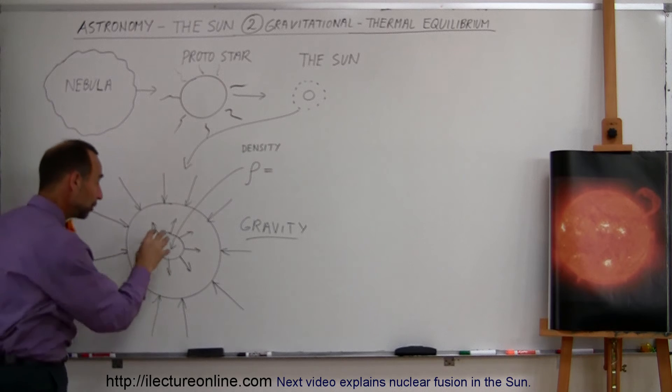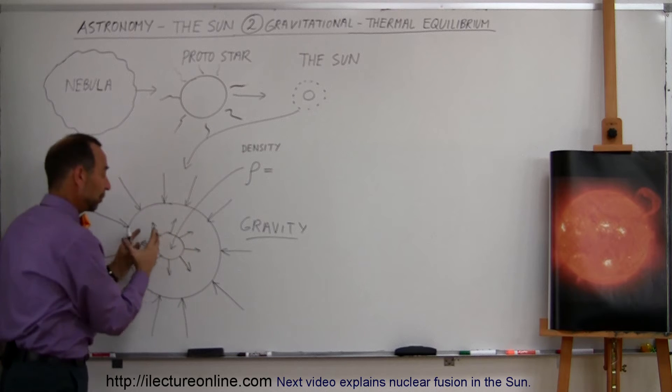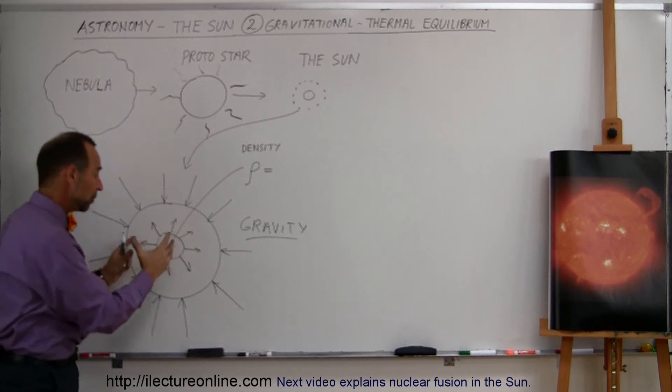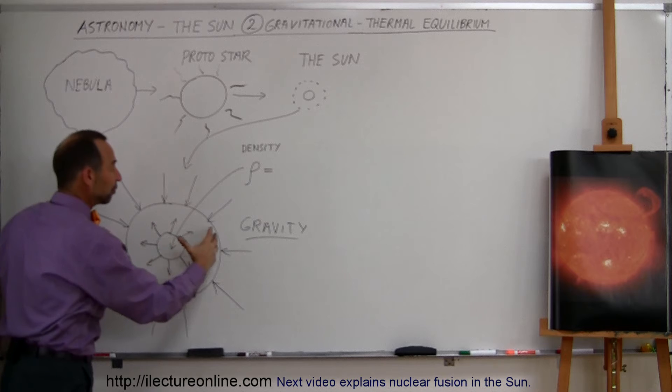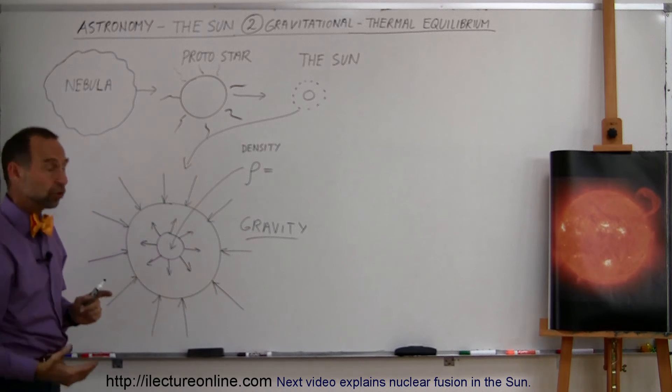Now, what would happen when the fusion process were to increase in ferocity? Well, then of course, more pressure would then be generated, more heat would be generated, and the star would then push back against gravity, and it would find a new equilibrium point as a larger star, as a larger sun.